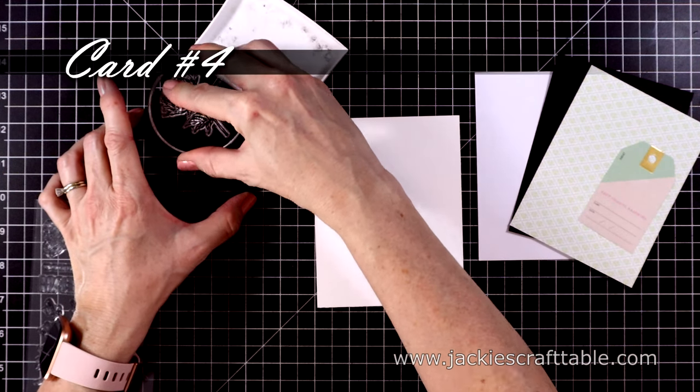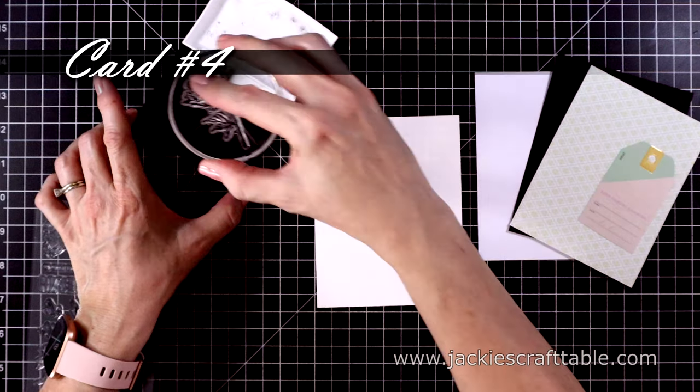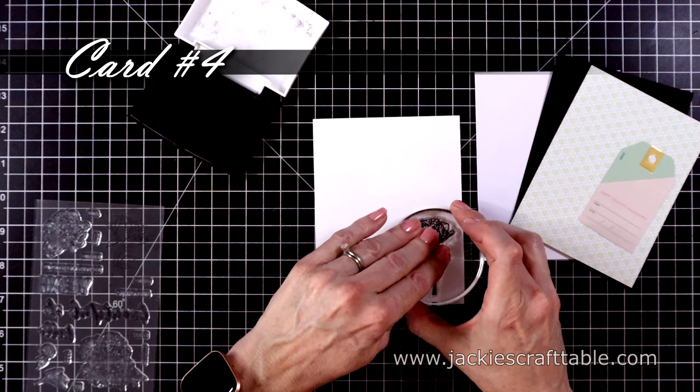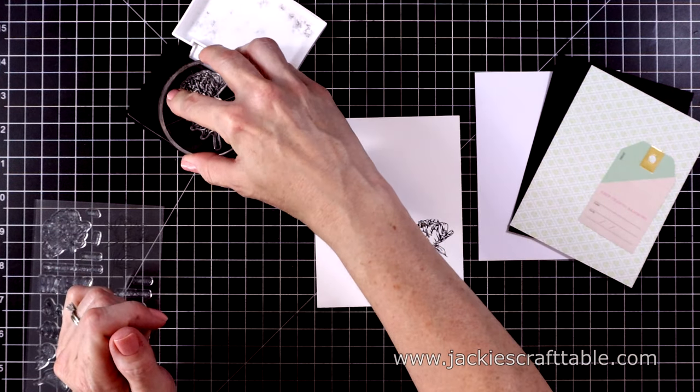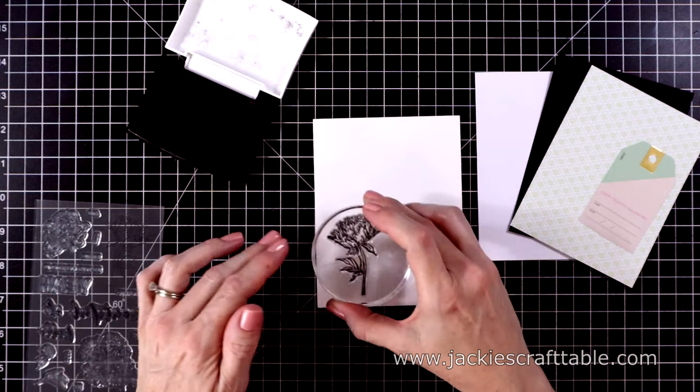Next, I'm going to use the beautiful flower stamp. I'll stamp this a few times while I'm at it. I'm just using some white cardstock to stamp it onto. The first stamping didn't go so well, so I'll stamp it again.